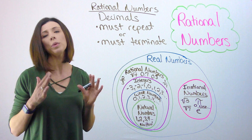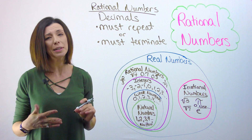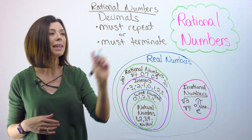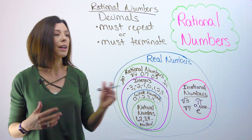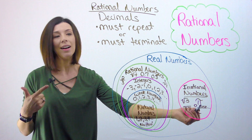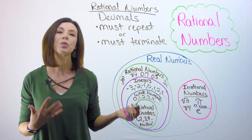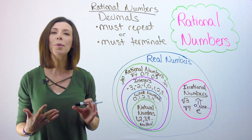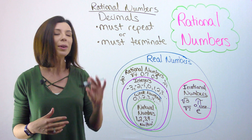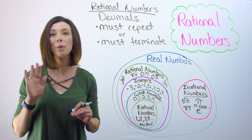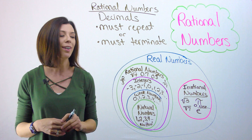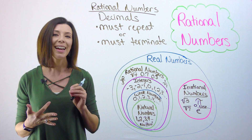Just to clarify with decimals, because this is the trickiest part: for a number to be rational, the decimal must either repeat or terminate. Looking back at our irrational example, it did not repeat and it did not terminate — indicated by those three dots. I hope this video has given you a better perspective on how we organize real numbers, the difference between rational and irrational numbers, and more clarification on integers, whole numbers, and natural numbers.